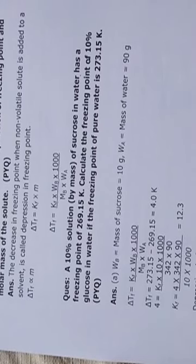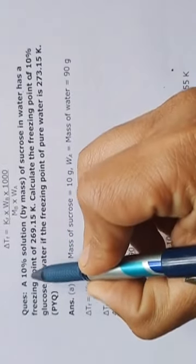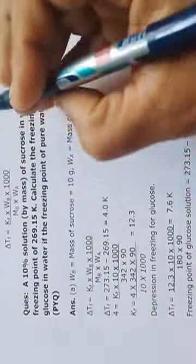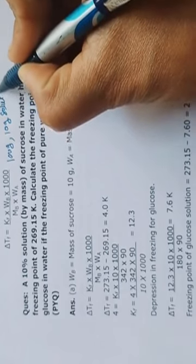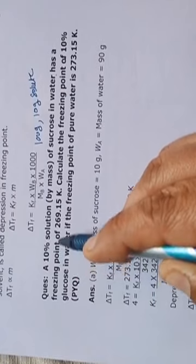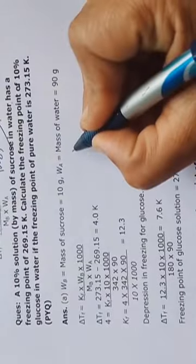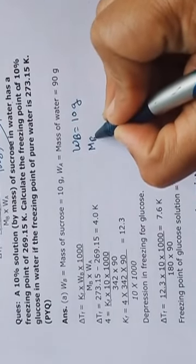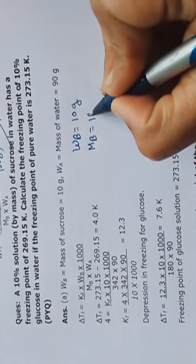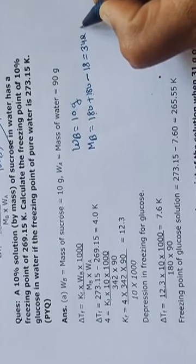We'll start the numerical on depression in freezing point. The first numerical given in the notes is this: a 10% solution by mass of sucrose. The molar mass of sucrose — sucrose means 2 glucose units — is calculated as 180 plus 180 minus 18, which equals 342 gram per mole.